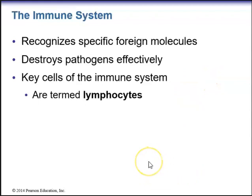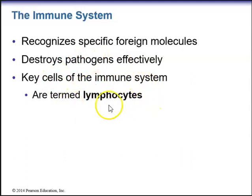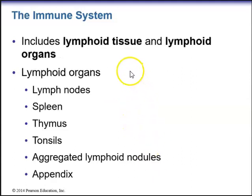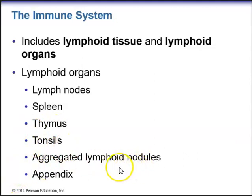The immune system recognizes specific foreign molecules and destroys pathogens effectively. The key cells of the immune system are lymphocytes. The immune system also includes lymphoid tissue and lymphoid organs: the lymph nodes, spleen, thymus, tonsils, aggregated lymphoid nodules, and the appendix.